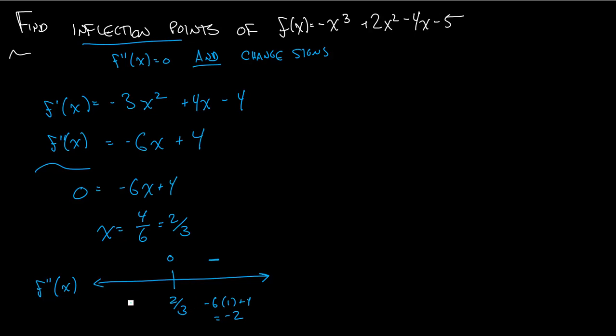What happens if I'm over here? Well, let's plug in something less than 2 thirds. Let's plug in something like 0. So like negative 6 times 0 plus 4, positive 4. So everything over here is positive. So why am I doing this plugging in? Well, it tells me whether the second derivative is positive or negative in this entire interval when I check one point. Same thing over here. I check 0, and it tells me that the second derivative is positive everywhere over here.